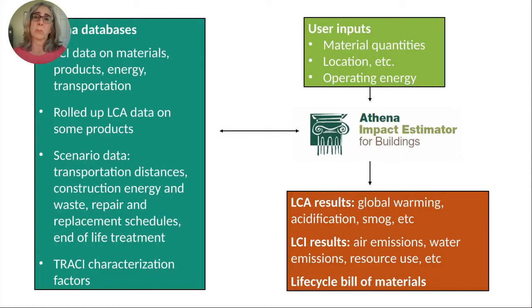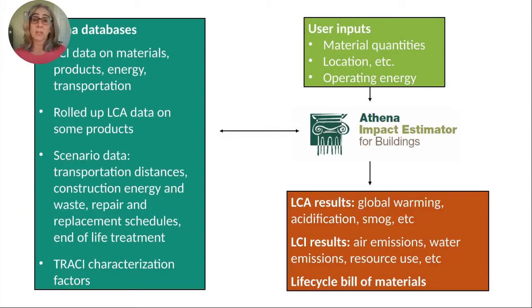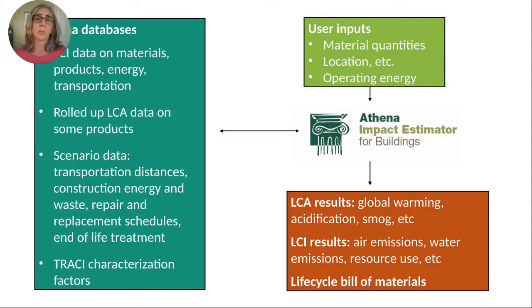We have two software tools that we provide for free to the public. One is to do LCA for buildings; the other is to do LCA for paving projects like roadways. These tools have been around for a long time, and we've been around for a long time as the North American experts in this arena. Here's how we approach this task: we start with inputs from the user — the quantities of materials used in the building, location, and optionally operating energy. Then we tap into the back end, which is fundamental environmental data on materials and energy, assumptions about transportation distances, product replacement schedules, and what happens to materials at end of life. Then we do calculations and end up with a big set of results.